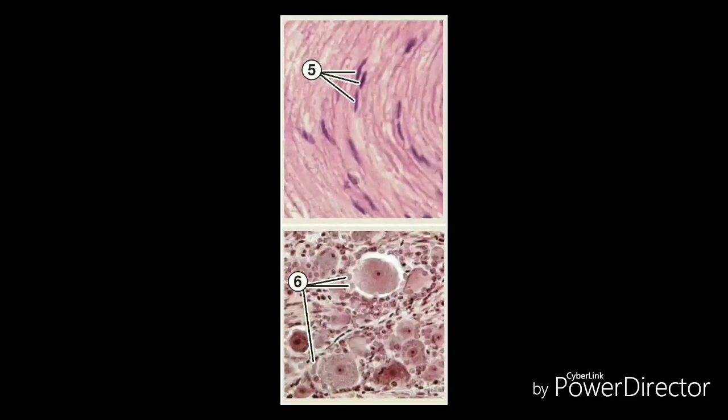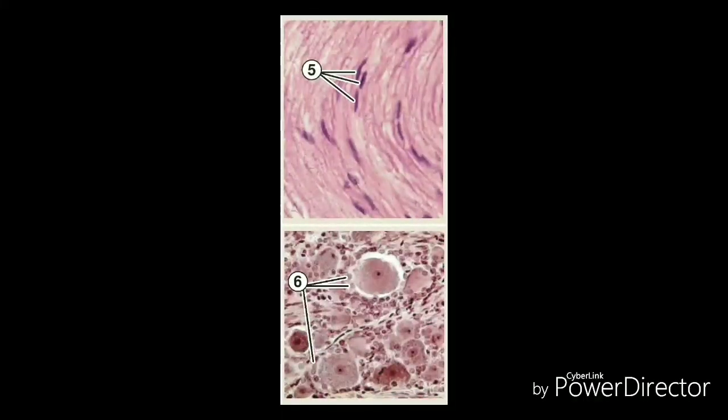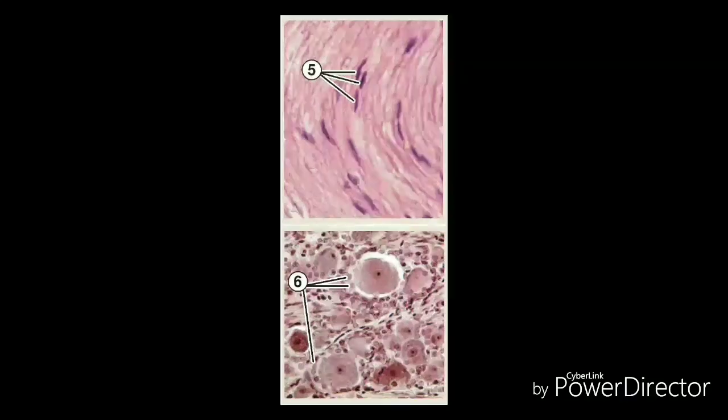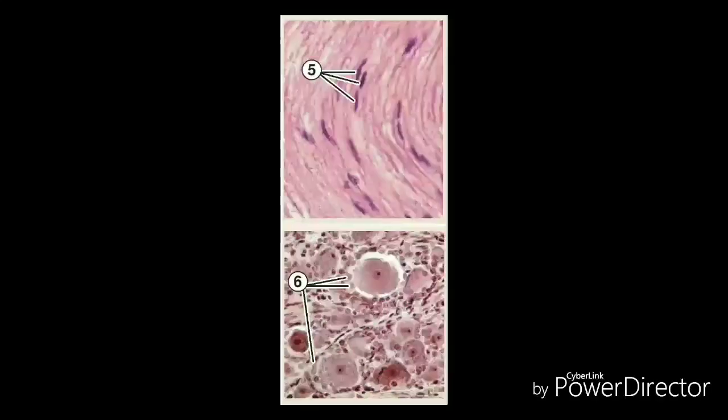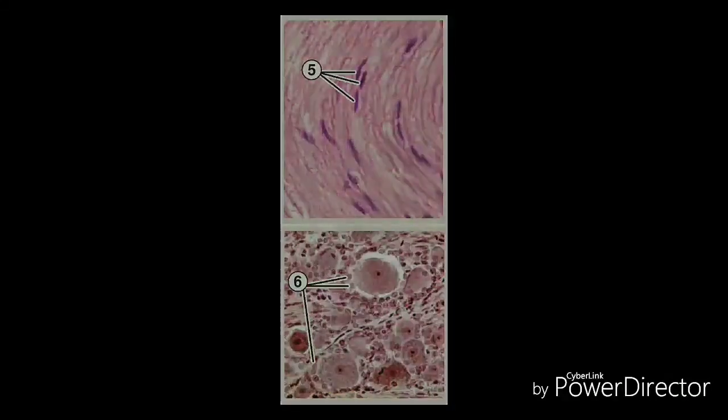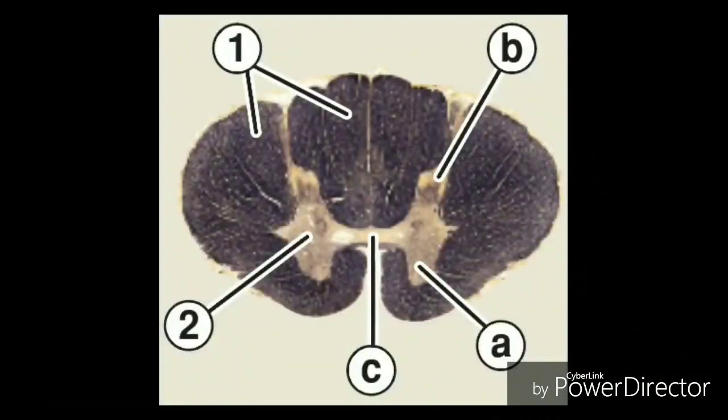The ventral and dorsal roots fuse together to form a spinal nerve, which travels down the spinal canal alongside the cord until it reaches its exit hole, the intervertebral foramen. Once the nerve passes through the intervertebral foramen, it branches. Each branch has both motor and sensory fibers.